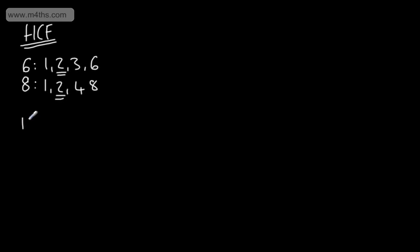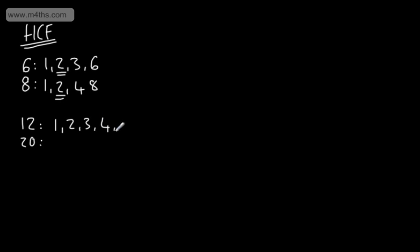Let's take two more numbers: 12 and 20. We want to find the highest common factor. An easier way to do this is to list out the factors of 12. The factors of 12 are 1, 2, 3, 4, 6, and 12. The way I've done that is to do 1 times 12, 2 times 6, and 3 times 4.